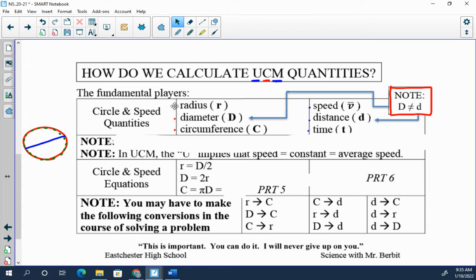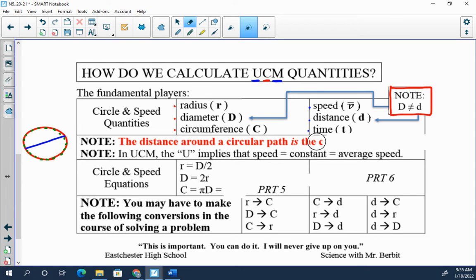And the uniform actually allows us to use a particular equation that we'll look at in just a moment. Here we go. Note: the distance around a circular path is the circumference. Distance is circumference for a full circle. You do half circle, it's half the circumference. You do a quarter circle, it's a quarter circumference. You do ten circles, it's ten times the circumference.